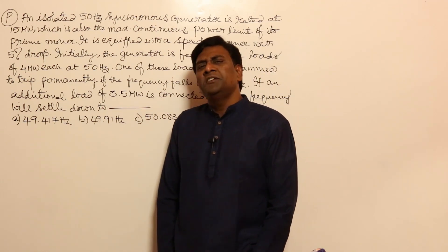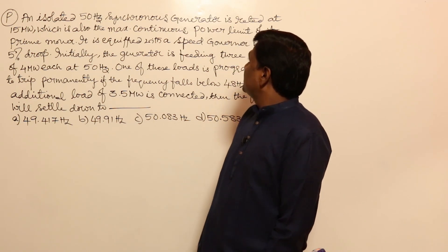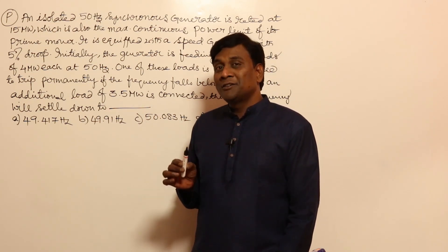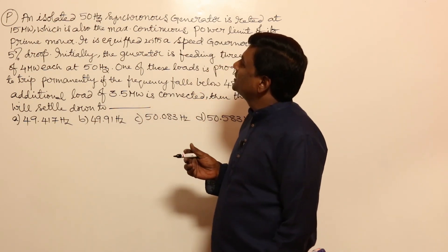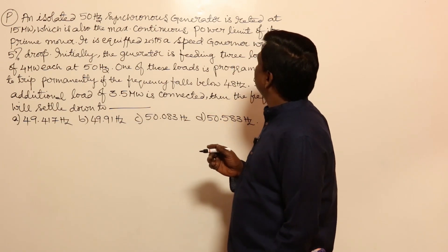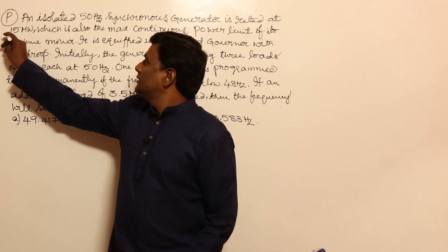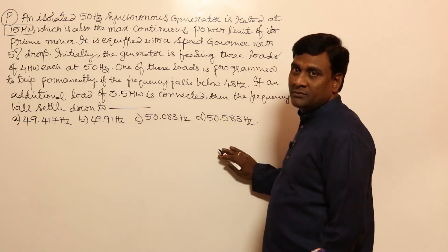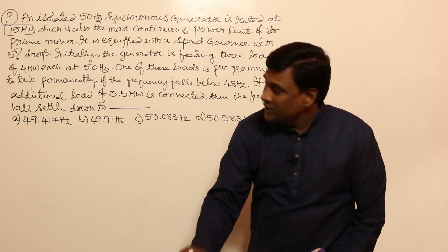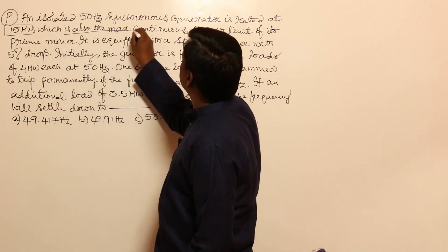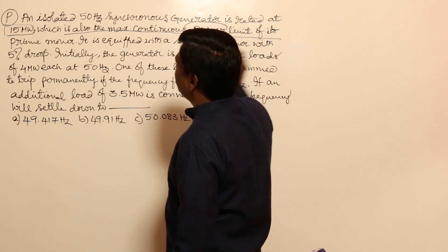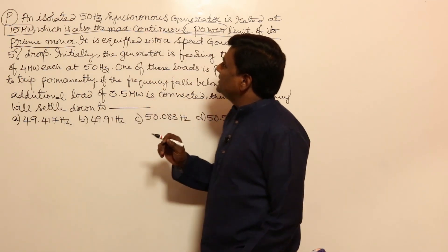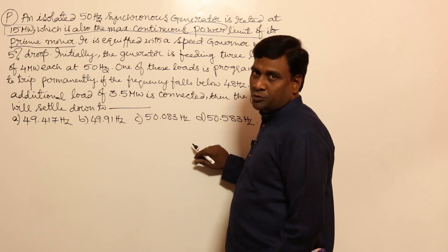This is a very beautiful problem. An isolated synchronous generator is rated at 15 megawatt, which is also the maximum continuous power limit of its prime mover — though they are not supposed to give this, as the answer will contradict that statement. It is equipped with a speed governor with five percent droop.